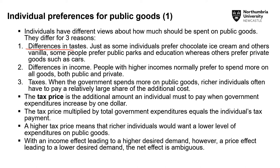First, we have differences in tastes. Just as some individuals prefer chocolate ice cream and others vanilla, some prefer public parks and education whereas others prefer private goods such as cars. Some argue we should spend more on public parks and education, whereas others argue for spending on policing. There are also differences in income — people with high incomes normally prefer to spend more on all goods, both public and private. And there are taxes: when the government spends more on public goods, rich individuals often have to pay a relatively large share of the additional cost, and it is not possible to raise taxes infinitely to fund public goods expenditure.